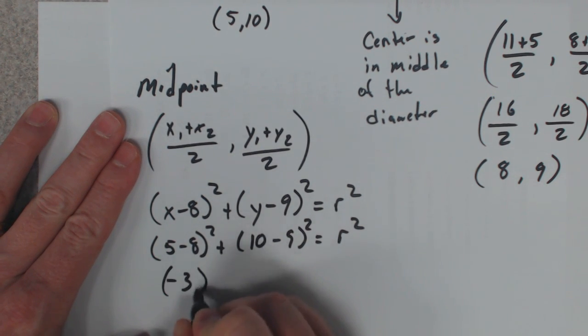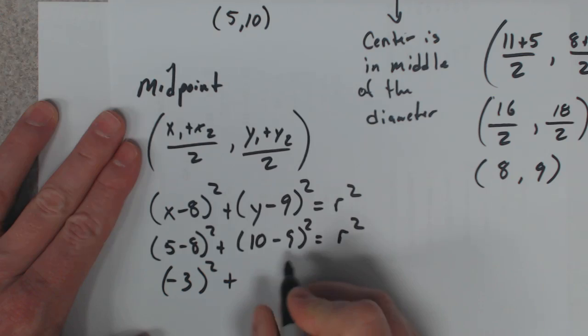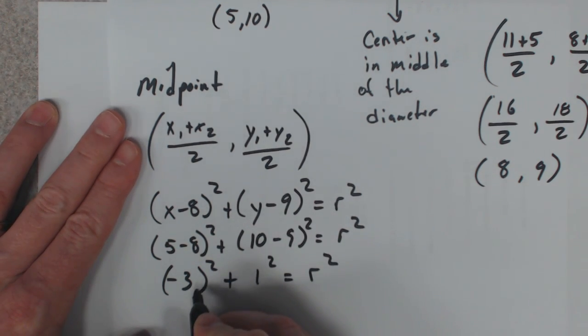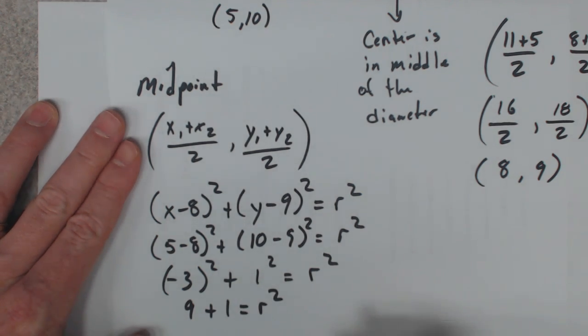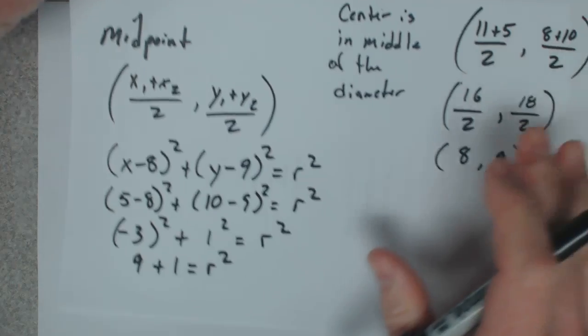5 minus 8 makes -3 squared. 10 minus 9 is 1 squared. And that would be 9 plus 1 equals r². 9 plus 1 is 10.